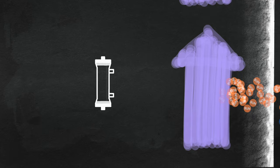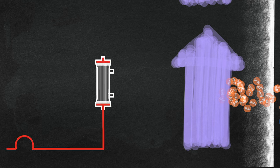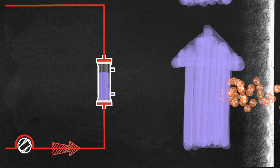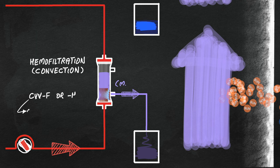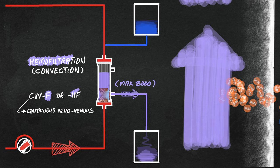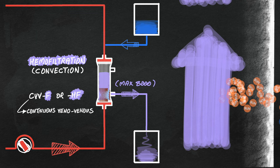When ultrafiltration or convection rate is increased to your typical continuous kidney replacement therapy rate, which is about 25 mL per kilogram per hour, the process is called hemofiltration, which includes replacement fluid administered pre- or post-filter. The latter is the case in this example.